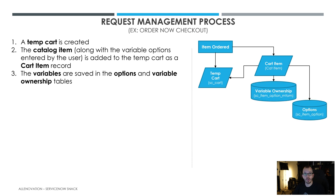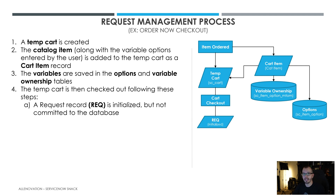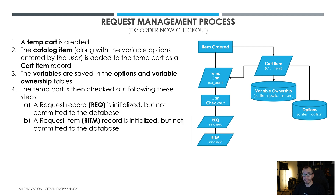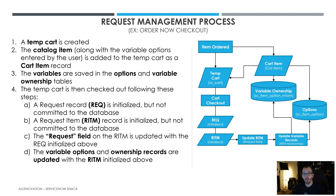After that, those variable ownership relationships and options are placed into their respective tables. Then your temporary cart goes through a cart checkout process. These are the steps that follow: a request record is initialized but not yet committed to the database; a request item (RITM) is initialized but again not saved to the database; the RITM is updated with the request record initialized in the step above; and then the request item record relationship is made with the variable ownership, relationship table, and options table. After that, your RITM is committed to the database.